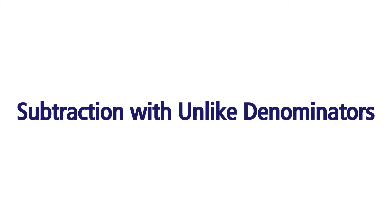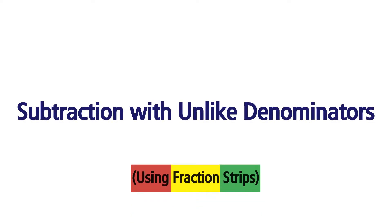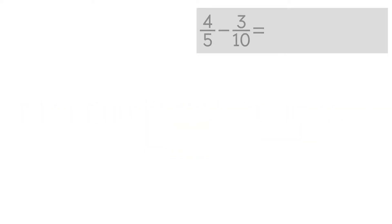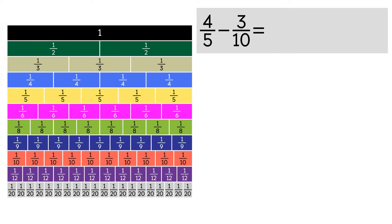Subtraction with unlike denominators, using fraction strips. We need to solve 4 over 5 minus 3 over 10. We can't subtract these two fractions because they have unlike denominators. To solve, we need to find the like denominator. We can do this by using fraction strips.